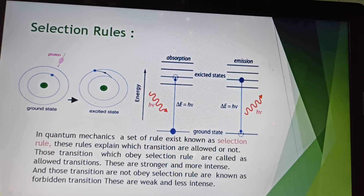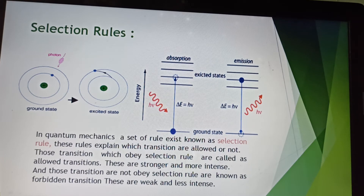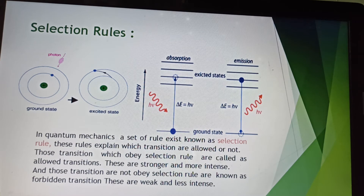There are multiple higher energy excited states and not all these are available to the electron — only certain transitions are allowed. In quantum mechanics, a set of rules exists known as the selection rule, and this rule explains which transitions are allowed or not. Transitions which obey the selection rule are called allowed transitions; these are stronger and more intense. Transitions that do not obey the selection rule are known as forbidden transitions, which are weak and less intense. The probability of transition between two given energy levels is determined by the selection rule, and it helps us differentiate between allowed and forbidden transitions.